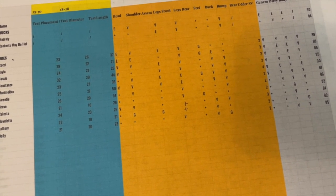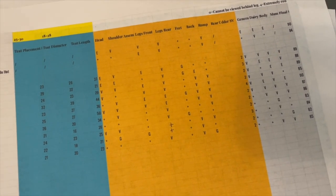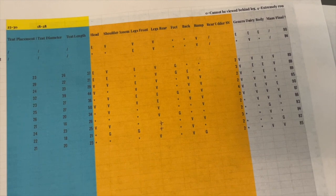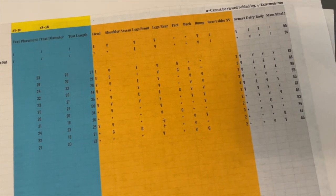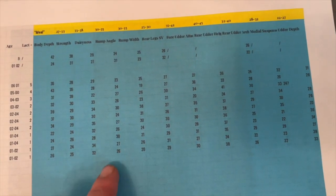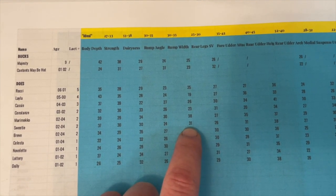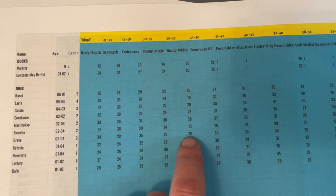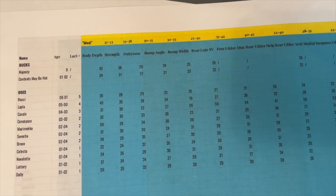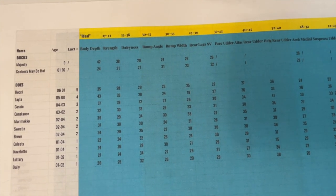Look through those columns and see where you're finding similarities and dissimilarities, and where you're doing well versus needing improvement. Also look for consistencies between certain dams and their offspring, or between certain sires and their offspring. I noticed in rump angle that three does with the same sire had the widest rumps — a 38, a 31, and a 30. So I now know which sire was consistently throwing the widest rump.